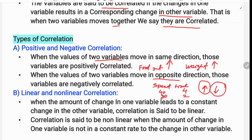The next classification is linear and non-linear correlation. When the amount of change in one variable leads to a constant rate of change in the other variable, the correlation is said to be linear. For example, if x is 1, 2, 3, 4 and y changes at a constant rate such as 20, 40, 60, 80, the variables are linearly correlated.